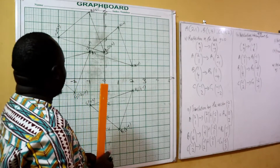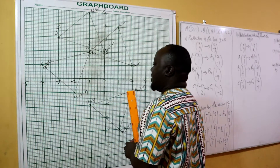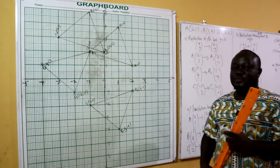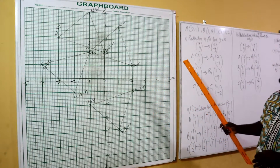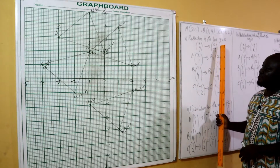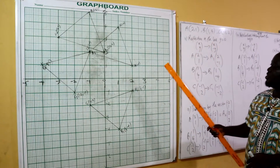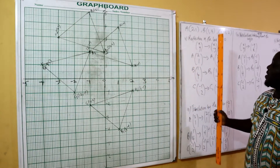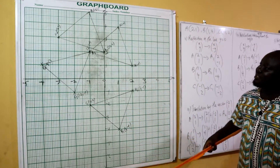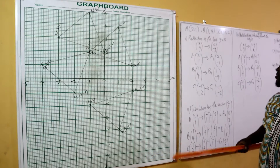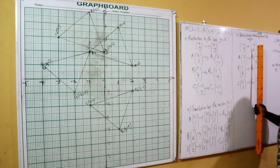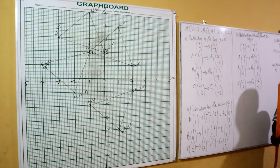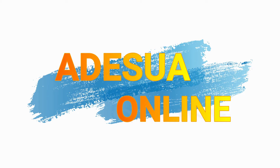This is our triangle A3B3C3. We have covered all the transformations: the reflection in y equals zero giving A1B1C1, the translation by vector (-2,1) giving A2B2C2, and the anticlockwise rotation of 90 degrees about the origin giving A3B3C3.